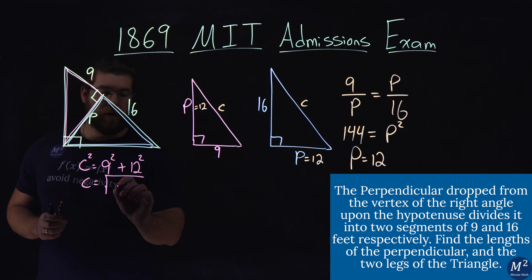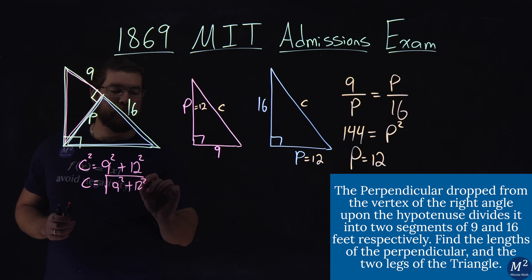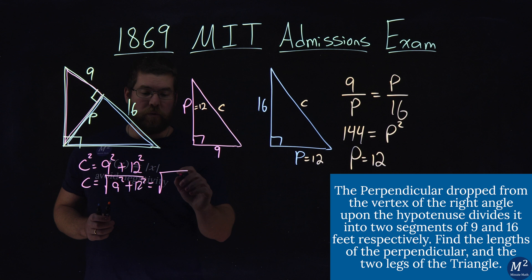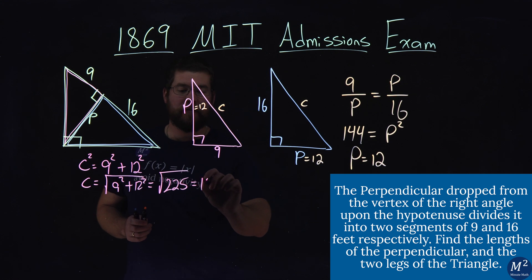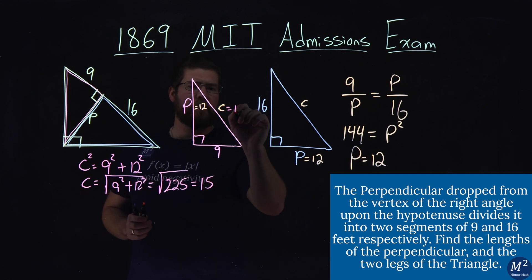So c is equal to the square root of 9 squared plus 12 squared is equal to the square root of 225. The square root of 225 comes out to be 15. So we have a length of 15 here.